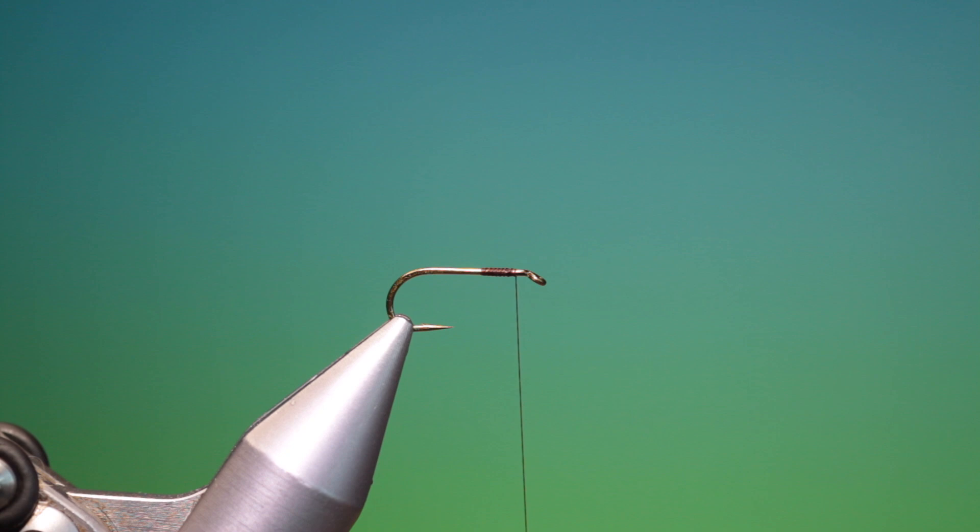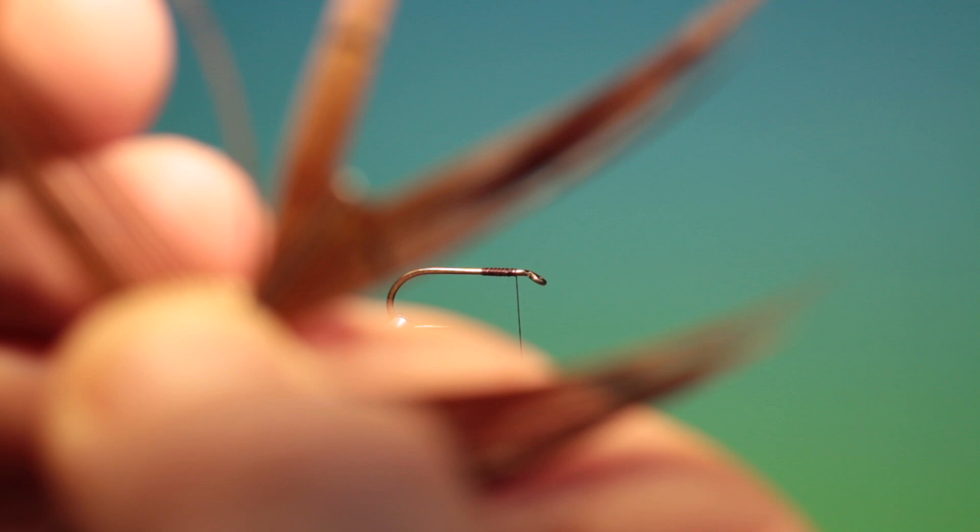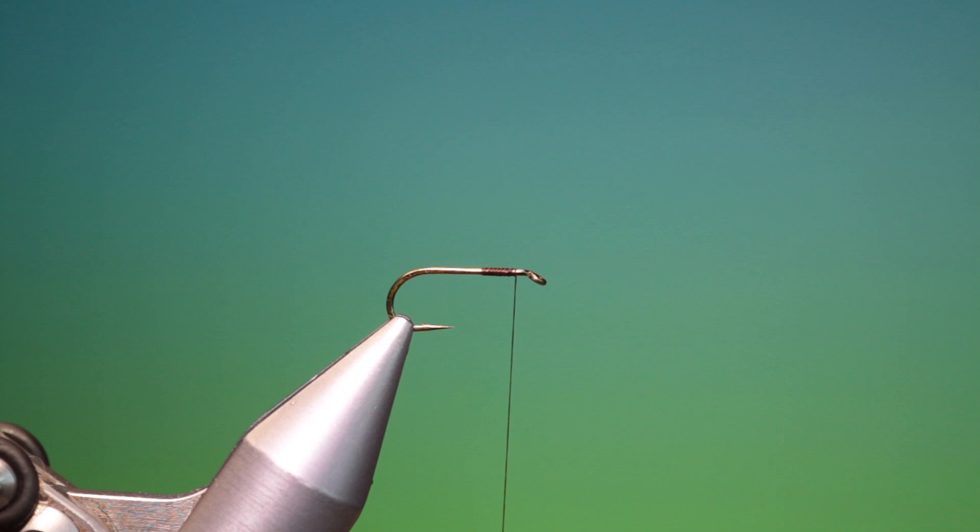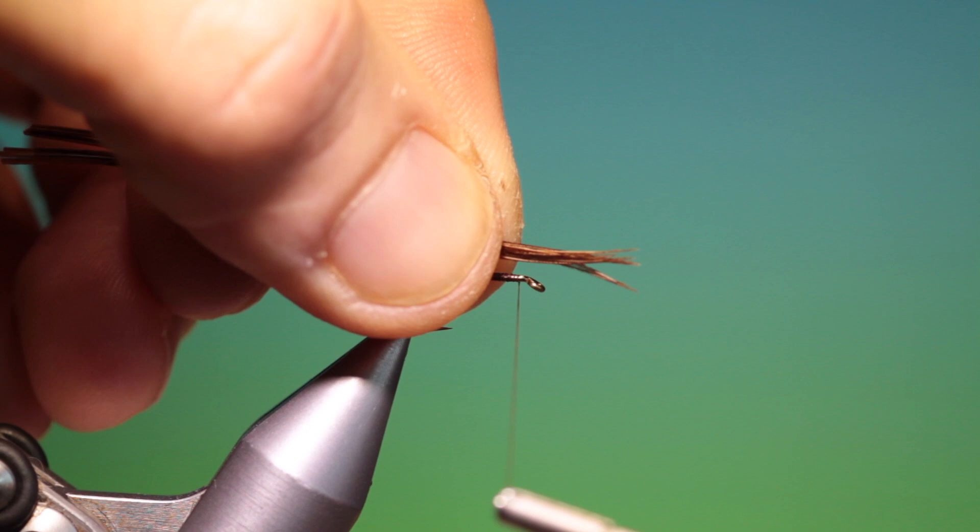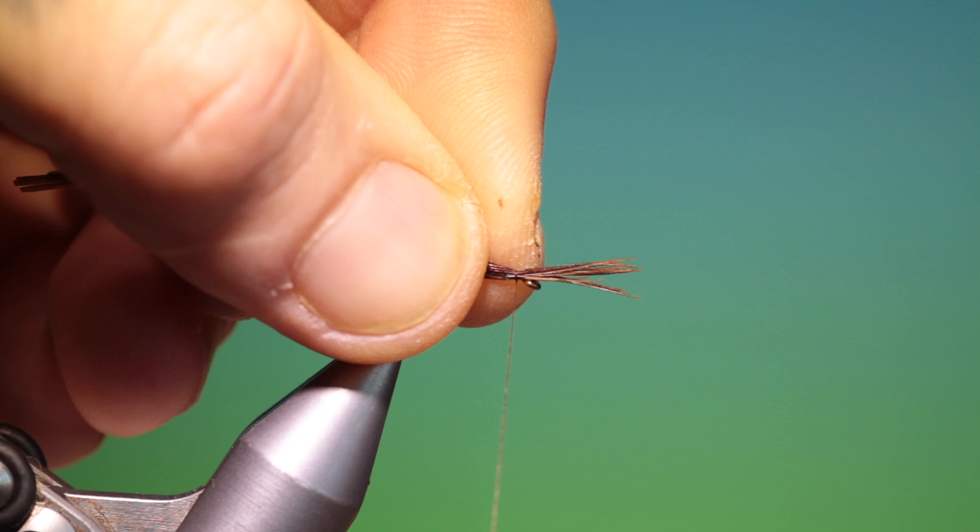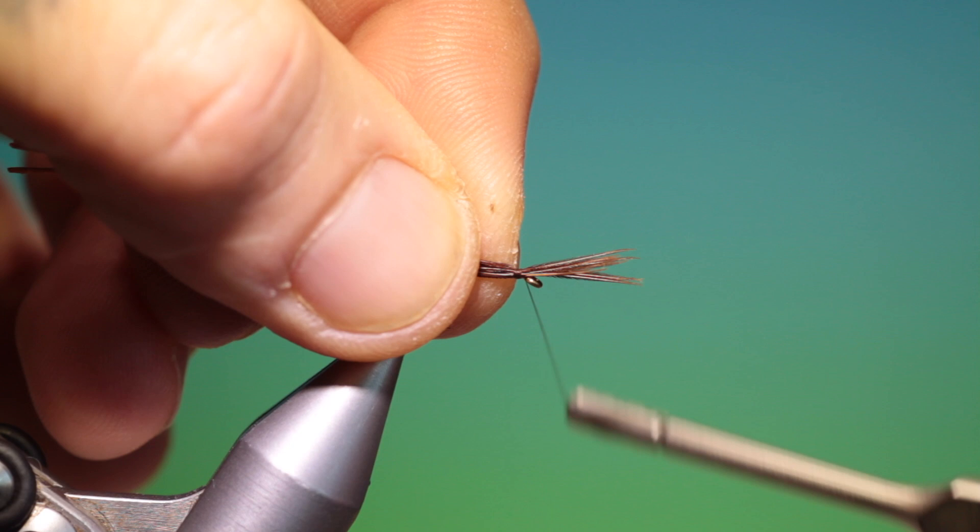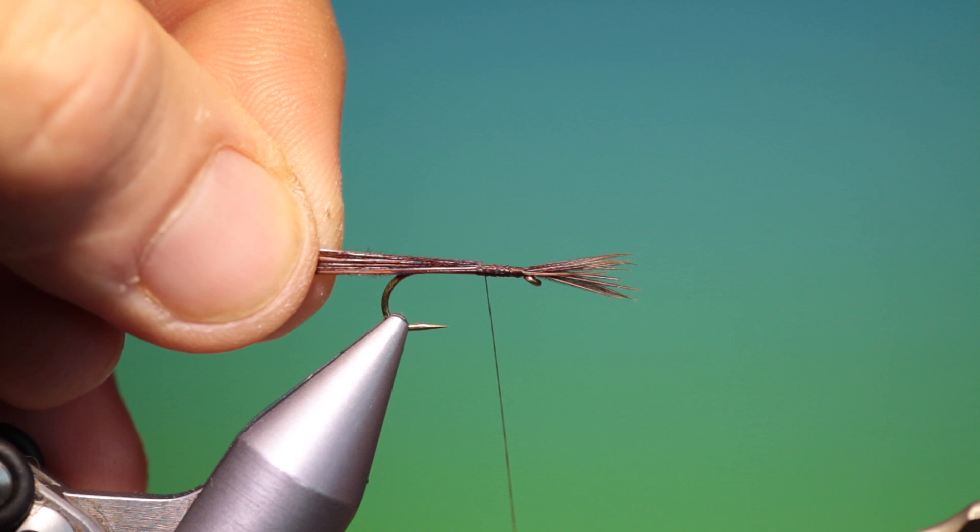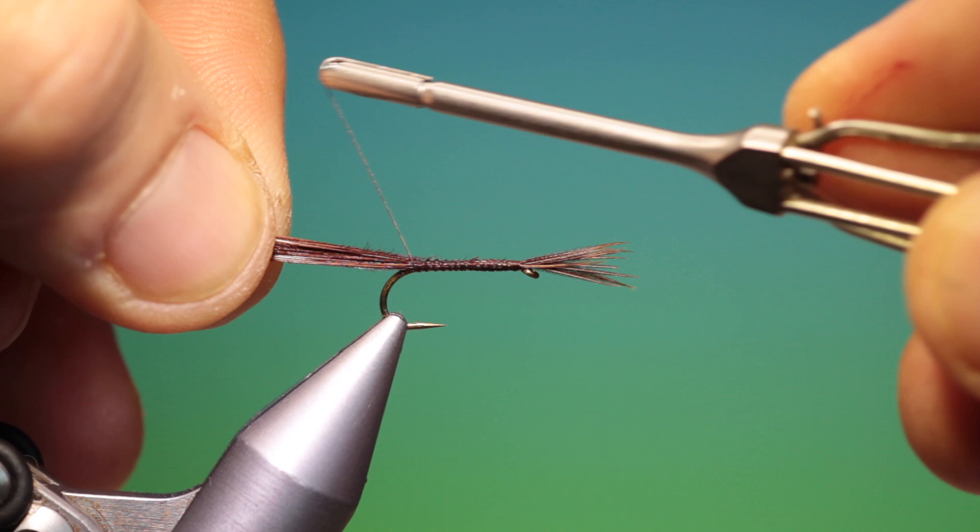And what we want is a little bunch of pheasant tail, there's about 10 or 12 fibres, and we want to level the tips up. These should be about one centimeter in front of the hook eye. We just tie those in and go forward like so, and then we can go back, keeping all the fibres bunched together. This is going to be the shell back afterwards.